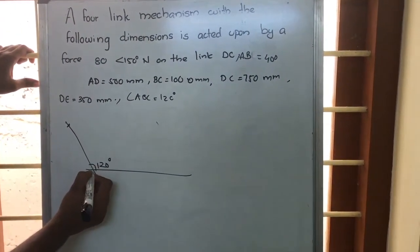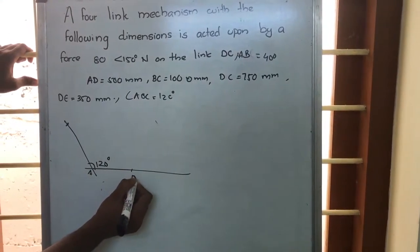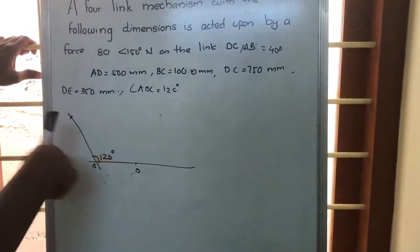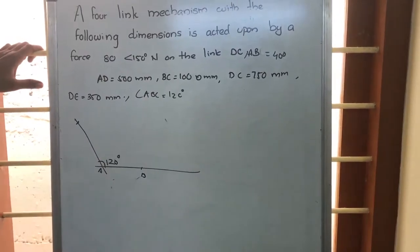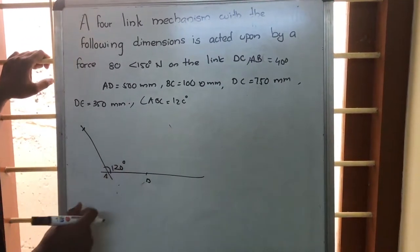AD is 500mm. This is point A and this will be point D. AD is horizontal, so this AD is 500mm along the horizontal.